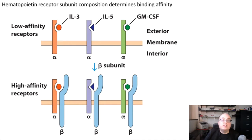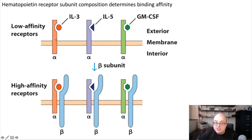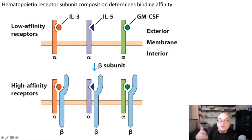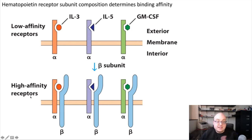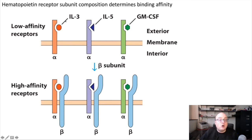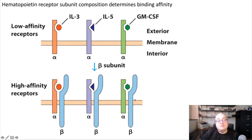Taking the example of IL-3, IL-5, and GM-CSF — these cytokines all share a common beta subunit. Under normal conditions, a cell might express all three receptor alpha chains. The alpha chains alone are probably low affinity receptors, which makes sense: at rest, we don't want our cytokine receptors activated by normal amounts of cytokines. But under an inflammatory stimulus, we might turn on the expression of the beta subunit of these cytokine receptors, transforming them into high affinity receptors — now much more sensitive to activation by all three cytokines, even at small concentrations.